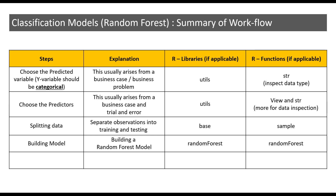Now, the last step is to evaluate the model accuracy, or in other words, check for prediction accuracy. As mentioned, the model accuracy will be checked on the testing dataset. We will compare the actual values in the testing data with the predicted values. The confusion matrix is one of the best ways to evaluate prediction accuracy of any classification model. The base package in R has a table function, and this function can help us build the confusion matrix to evaluate classification models.